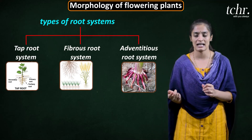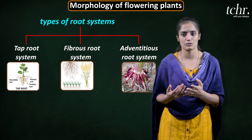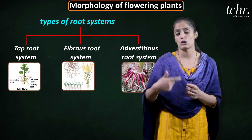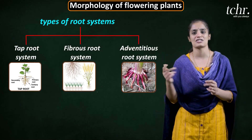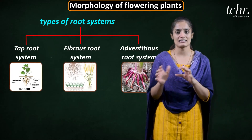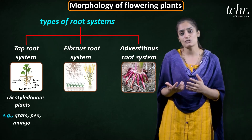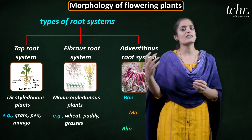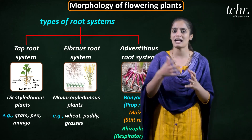The exception is that adventitious roots are derived from other parts apart from the radical — such as the stem or nodal region. If they are producing the roots from those parts, you call them adventitious roots. Tap roots are mostly found in dicots, fibrous roots in monocots, and adventitious roots are a special adaptation.